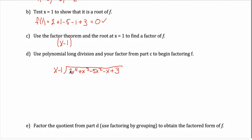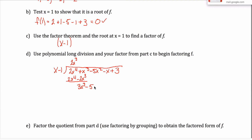As I perform polynomial long division, I expect the remainder to be 0. To eliminate the 2x⁴ term, I put 2x³ up top. Multiplying 2x³ by (x − 1) gives 2x⁴ − 2x³. Subtracting — and this is where many people make mistakes — the 2x⁴ terms cancel, and 1x³ minus (−2x³) gives positive 3x³. Then I bring down the −5x² term.